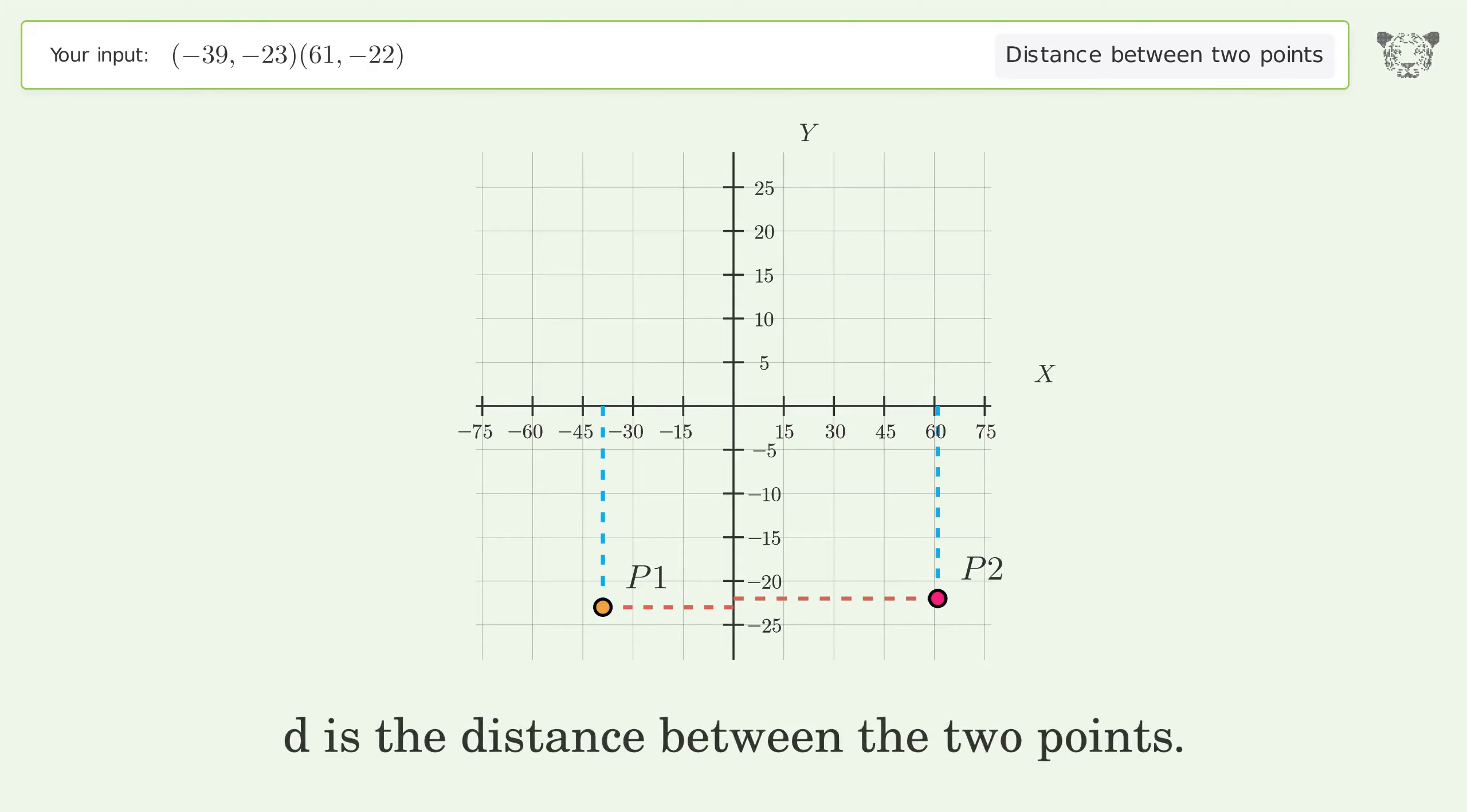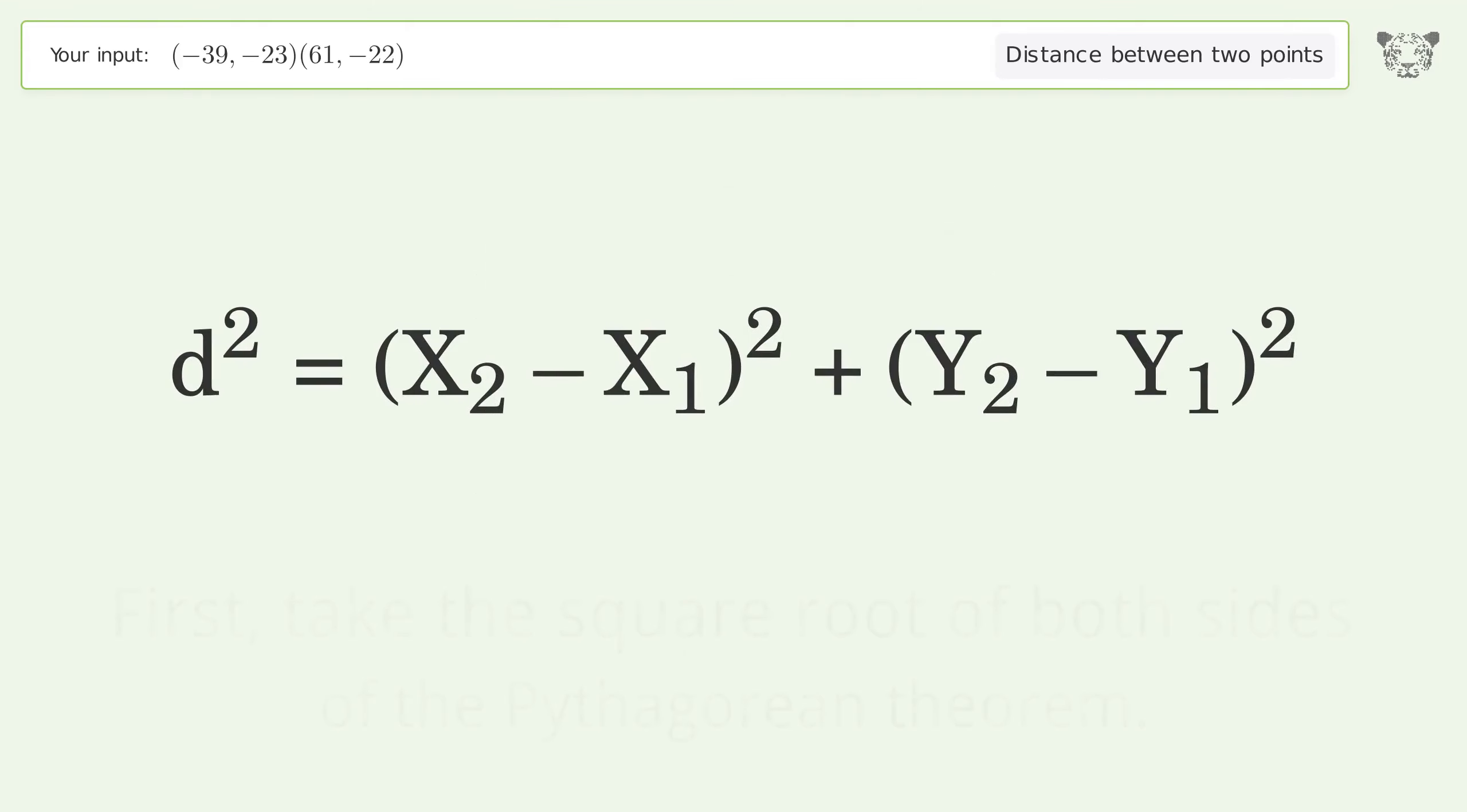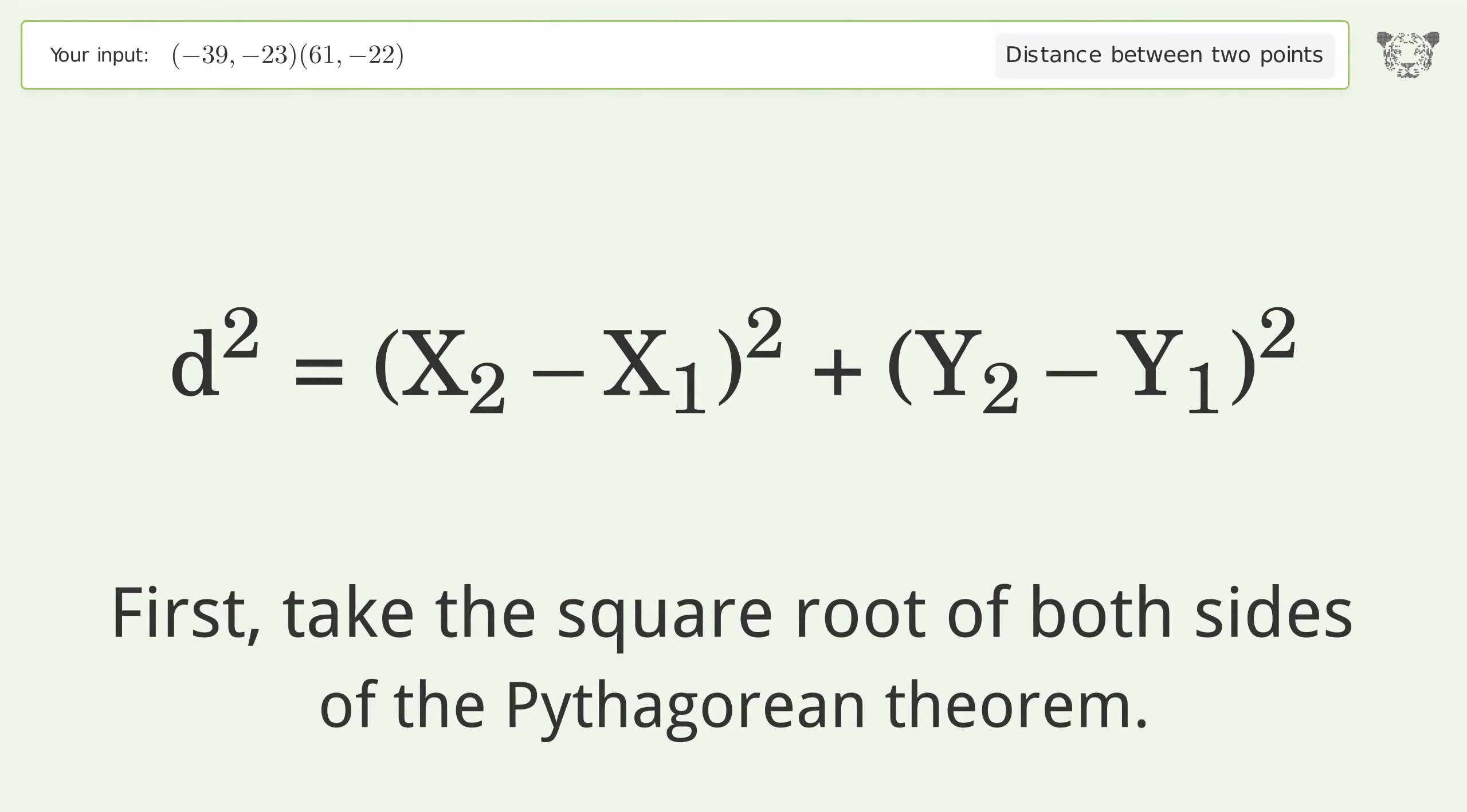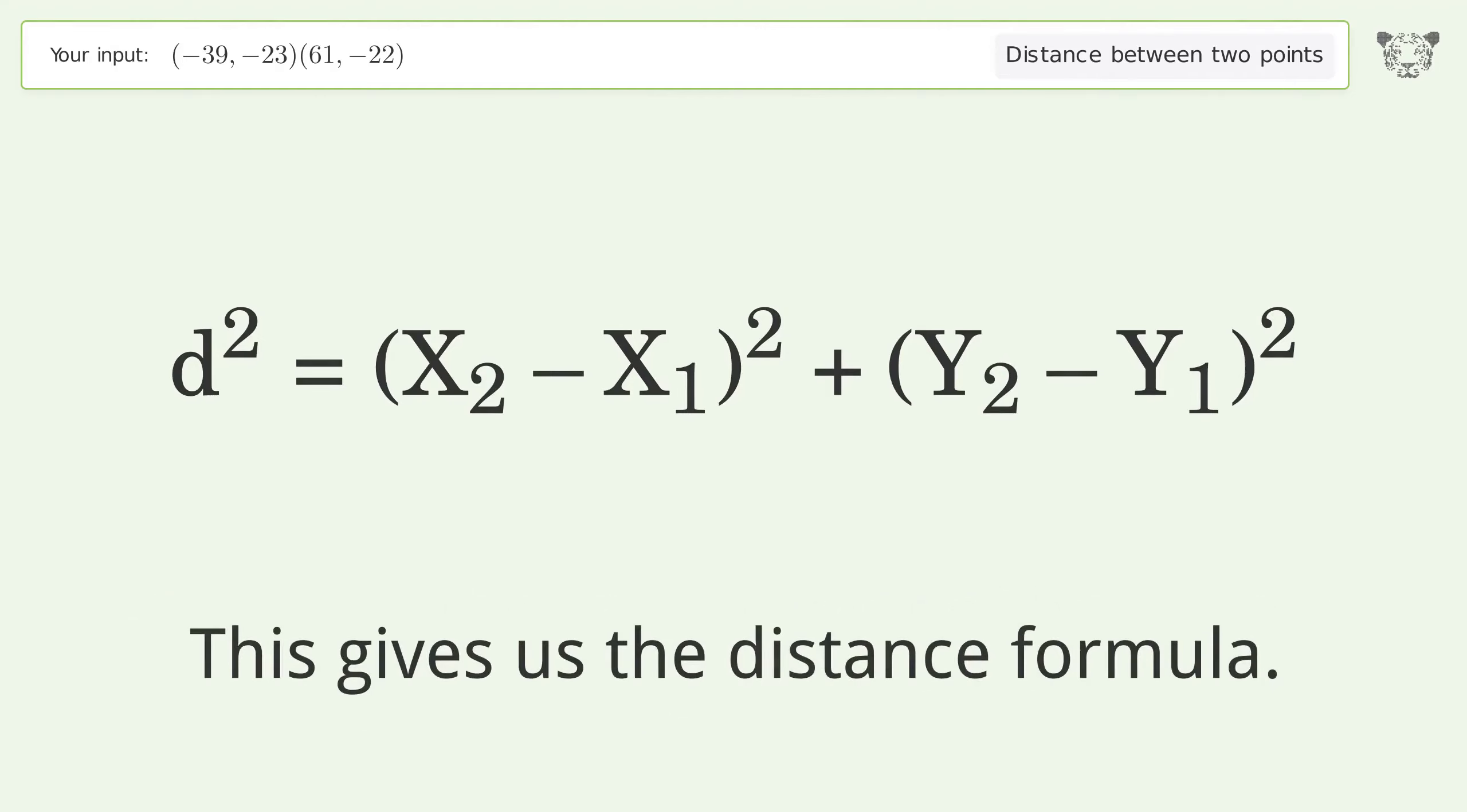d is the distance between the two points. First, take the square root of both sides of the Pythagorean theorem. This gives us the distance formula.